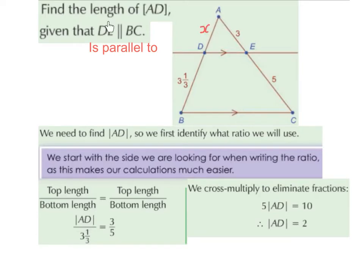I'm told that DE is parallel to BC. I have my little arrows that represent parallelism. These little lines mean parallel.